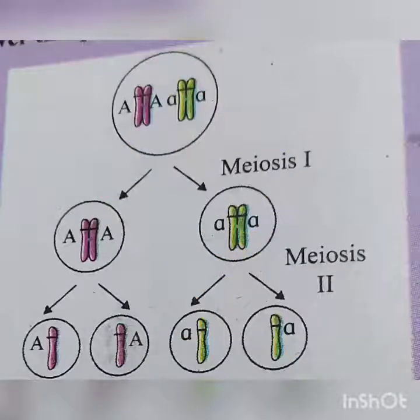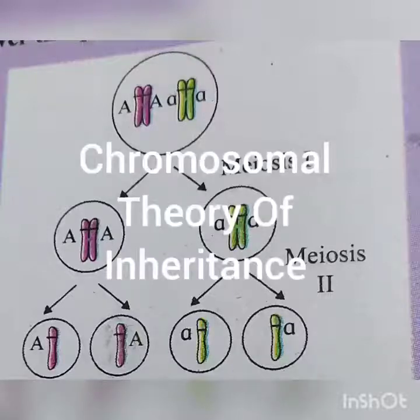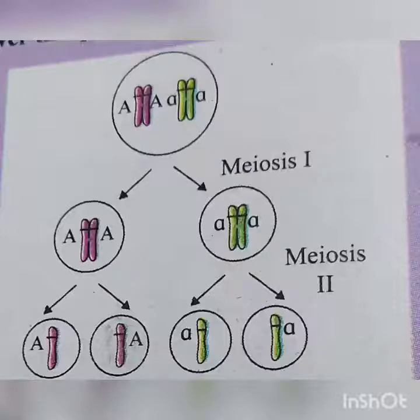This theory identifies chromosomes as the carriers of genetic material. It states that chromosomes are present in pairs in somatic cells, or diploid cells, and during gamete formation, homologous chromosome pairs segregate and assort independently during meiosis.